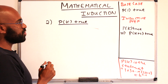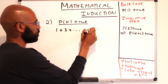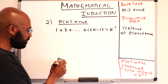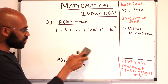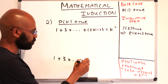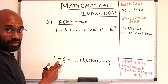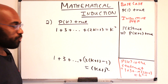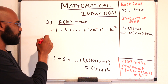Our inductive step asks us to assume pk is true, so that would be saying that 1 plus 3 plus up to 2k minus 1 equals k squared. Then it asks us to establish that pk plus 1 is true. Our goal is to use this and work toward proving that 1 plus 3 plus dot dot up to 2 times the quantity k plus 1 minus 1 equals the quantity k plus 1 squared. The remainder of the mathematics we need to do is somehow go from here to here.